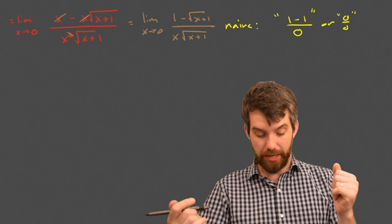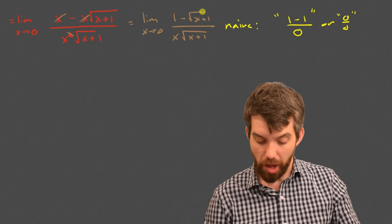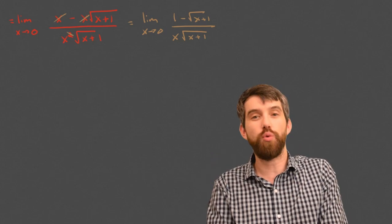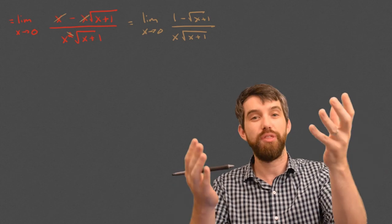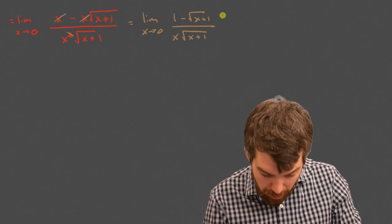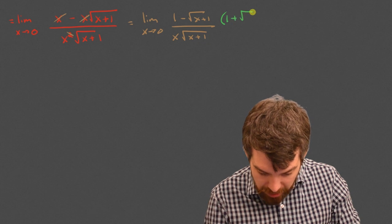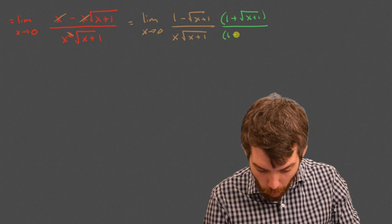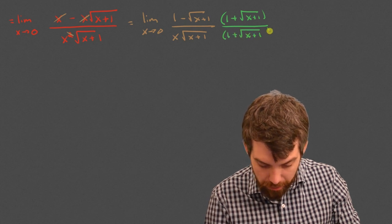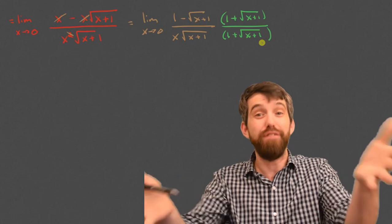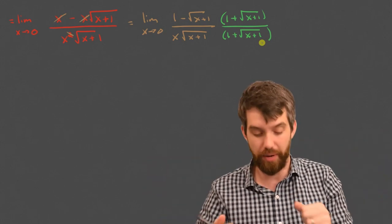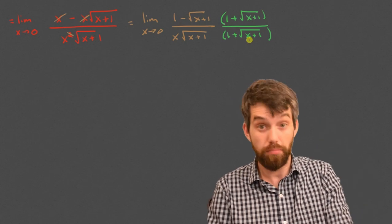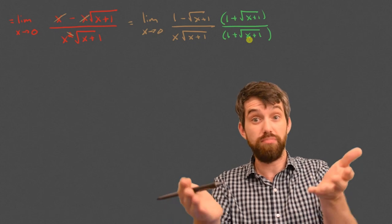What algebra can I do next? I notice there's a square root on the top. When you have a square root in this kind of expression, the alarm bell should be to use the radical conjugate. So I'm going to multiply the top and the bottom by 1 plus the square root of x plus 1. Multiplying by this is just a funky version of 1, so it's perfectly justified. Let's carry out this multiplication and see what we get.